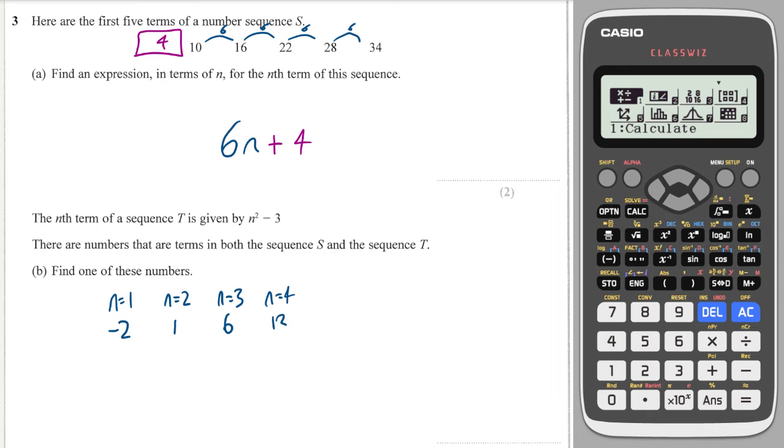N equals five: 25 - 3 = 22. And there we go, we've got a term which is in both sequences, so that's the one I'm going to choose.